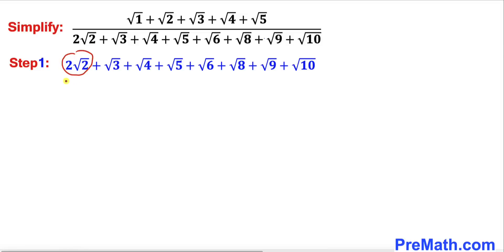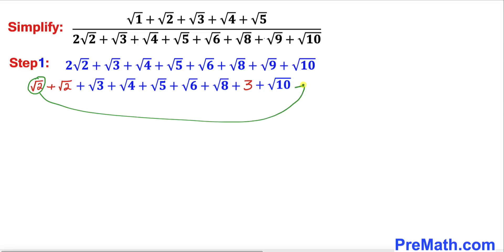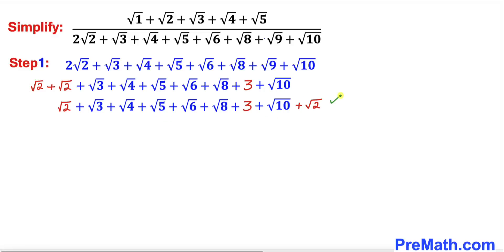I am going to write 2 times square root of 2 as square root of 2 plus square root of 2. And likewise, square root of 9 could be written as 3. So I have replaced 2 times square root of 2 by square root of 2 plus square root of 2, and replaced square root of 9 by 3. Now in this next step I am going to rearrange these terms — I'm going to move this first square root of 2 all the way to the very end.